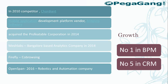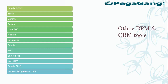Pega is number one in BPM and number five in the CRM segment. Competitors in the BPM market include Oracle BPM, Tibco, Cordys, Savvion, IBPM, and Lombardi from IBM. According to Gartner, Pega is the top leader. For CRM, competitors include Salesforce, SugarCRM, Oracle CRM, and Microsoft Dynamics CRM — with Salesforce leading the CRM space.